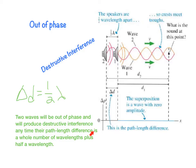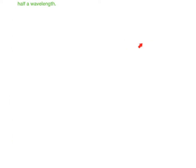Destructive interference results from a path length difference of half a wavelength. If we increase that path length difference by an additional wavelength, we get the same result — destructive interference for path length differences of one and a half wavelengths, two and a half wavelengths, and so on. To sum up: we always get constructive interference when the path length difference is an integer multiple of the wavelength, and destructive interference when the path length difference is an integer multiple plus half a wavelength. This shows that the path length difference needed depends on the wavelength and therefore the frequency.